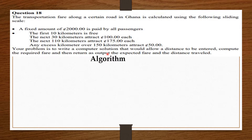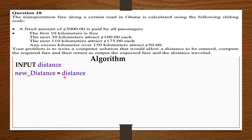From the question, we are to allow distance to be entered, so we are going to take distance as input from the user or the passenger. I am going to store a copy of the user's distance in a new variable called new_distance — I'll explain why as we go along. According to the question, a fixed amount of 2000 cedis is paid by all passengers, so the fixed amount — fare in this case — is equal to 2000.